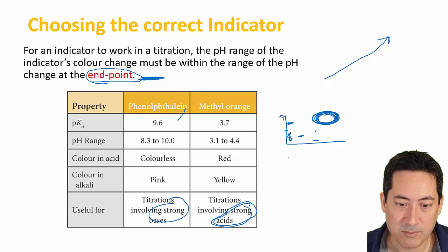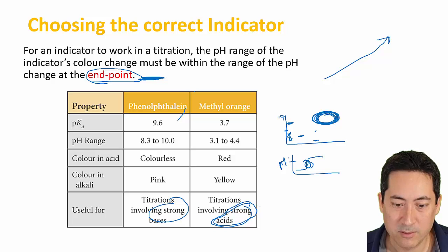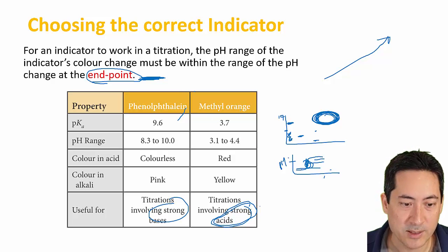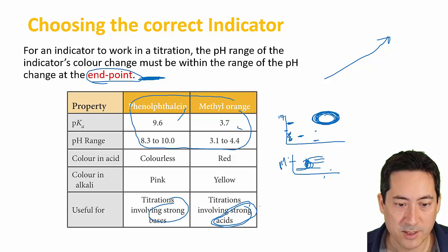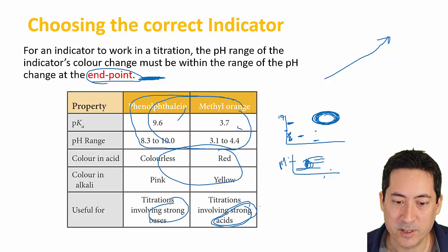Being aware of the strength of the acid and base you're using will let you know the pH range at which the color will change, and that will help you determine which indicator to use. Your data booklet has a list of all of these pKa values, pH ranges, indicators, and their color changes. The next video will help you understand what the titration curves look like.